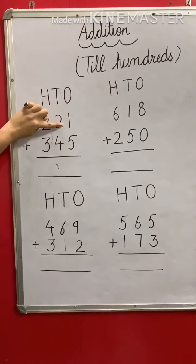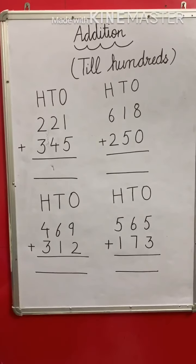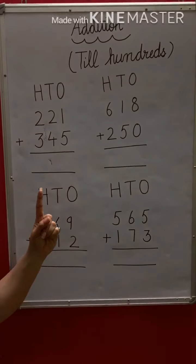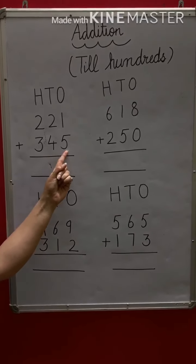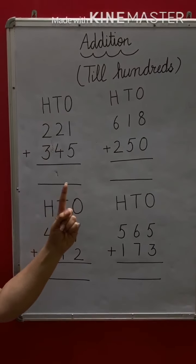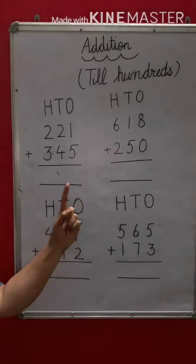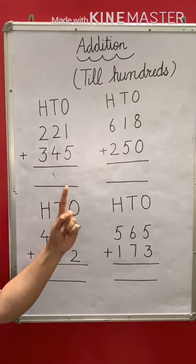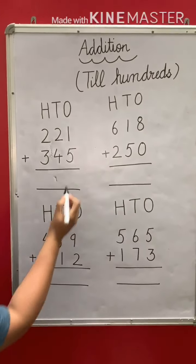Out of 1 and 5, which is greater? 5. So we will keep 5 in mind and for this 1, either you can take one finger up or count in blocks. So if we keep 5 in mind and 1 finger up, we start counting forward from 5. After 5, what comes next is 6. So we will write 6 here.